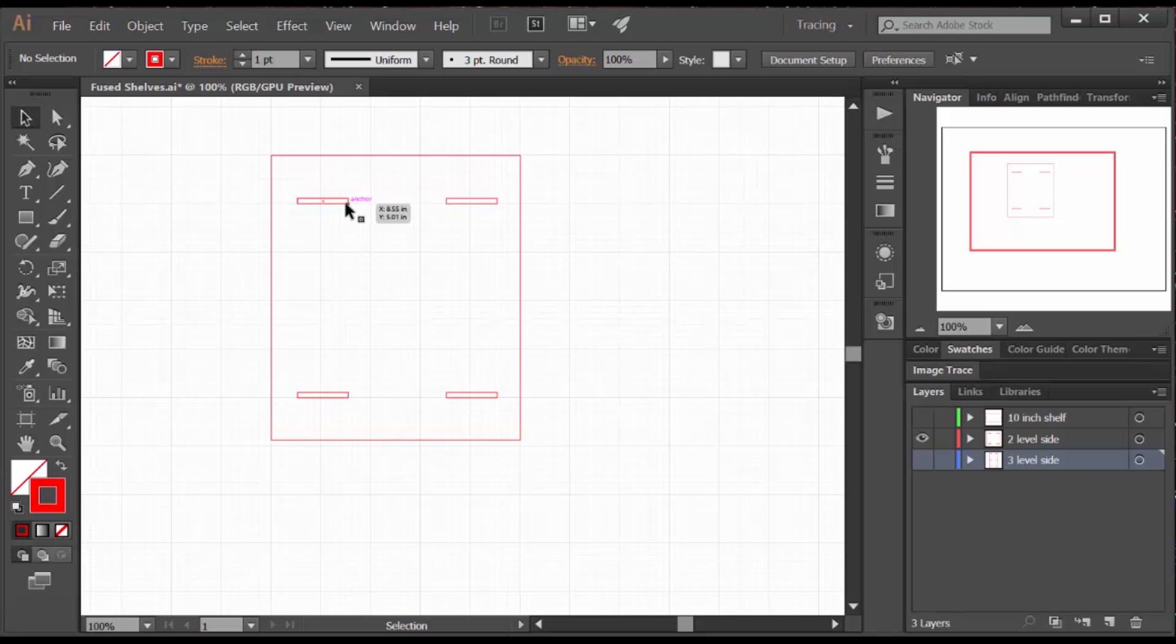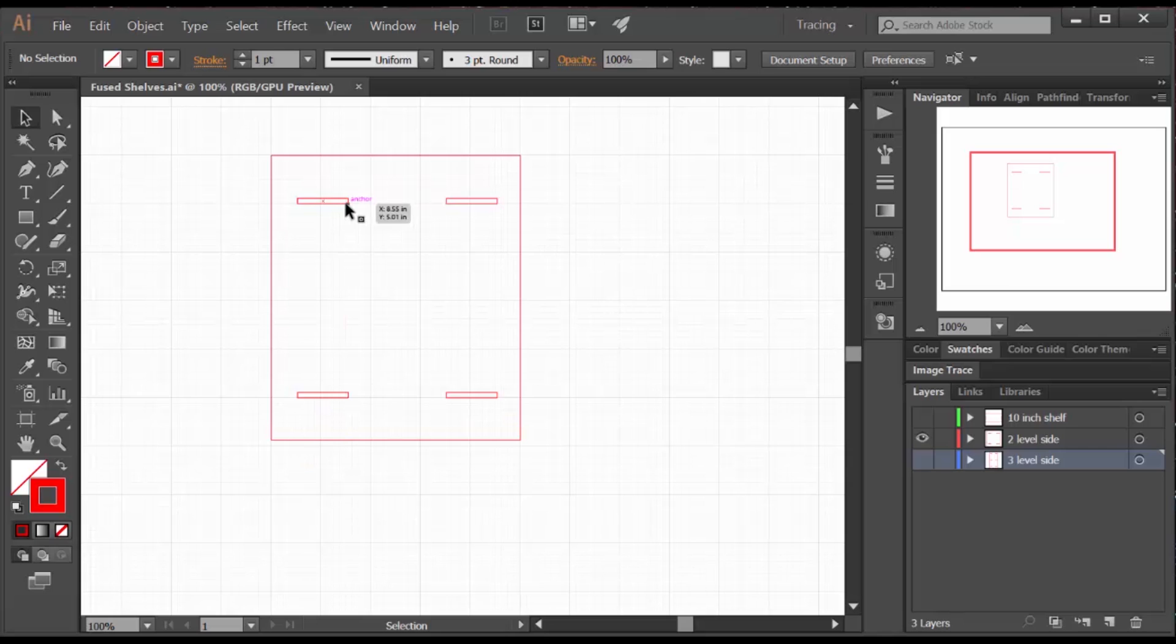The fused shelves, the hardest part about the fused shelves is getting the size of the slot right, because acrylic does not have consistent thickness, and this is based on the thickness of your acrylics. So you have to actually measure it, and use that measurement and test it to make sure these slots are the right size.